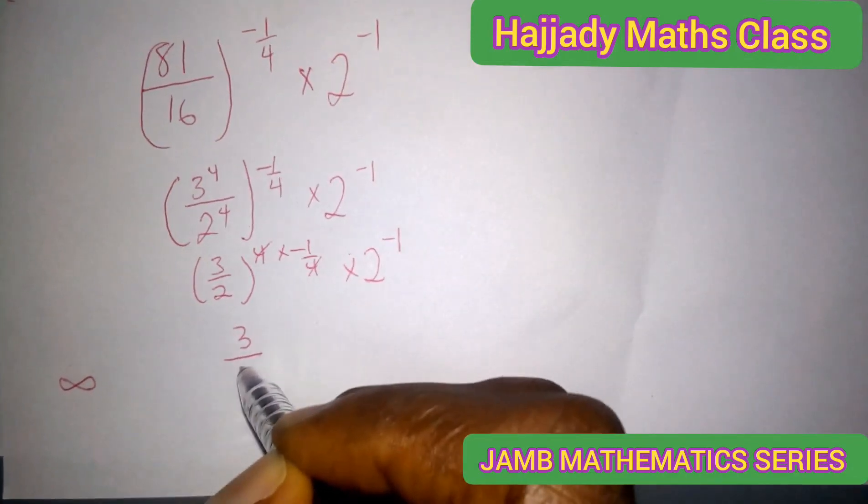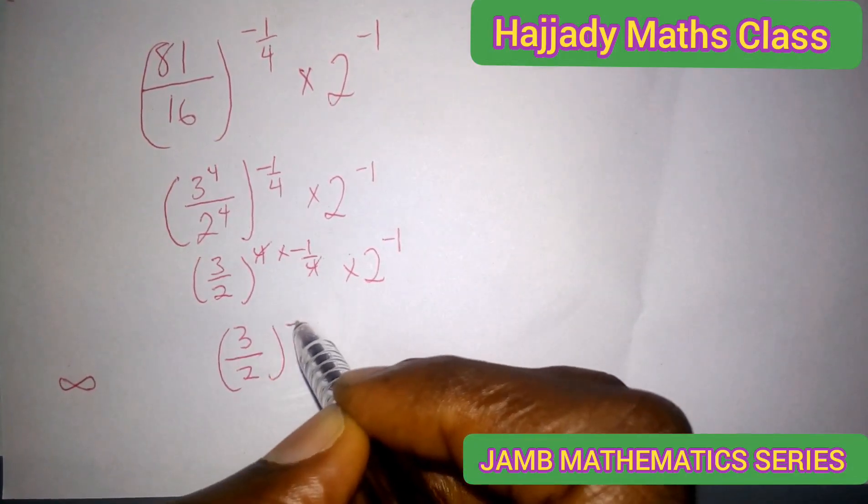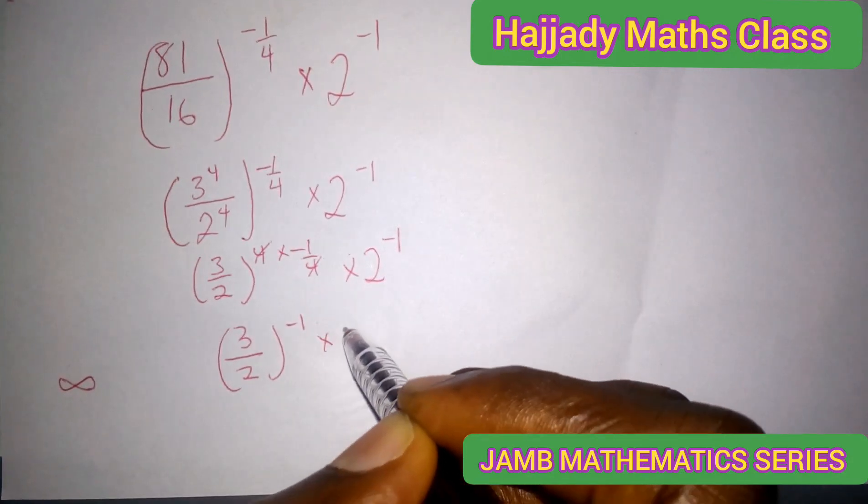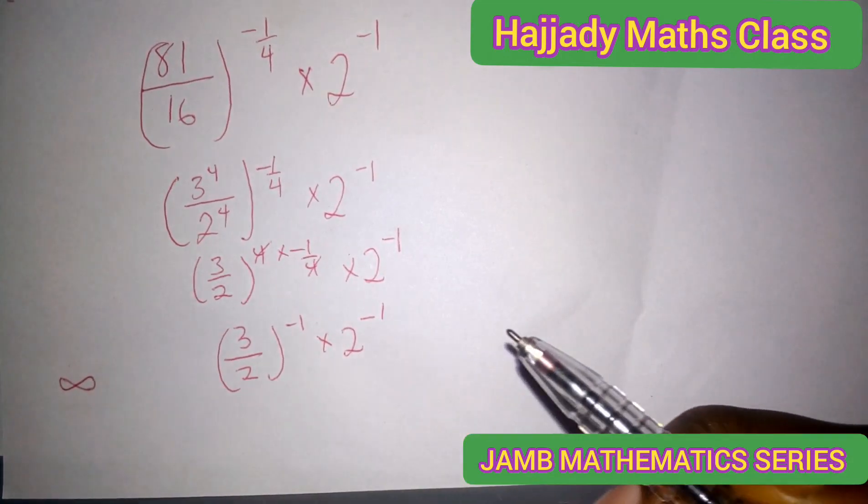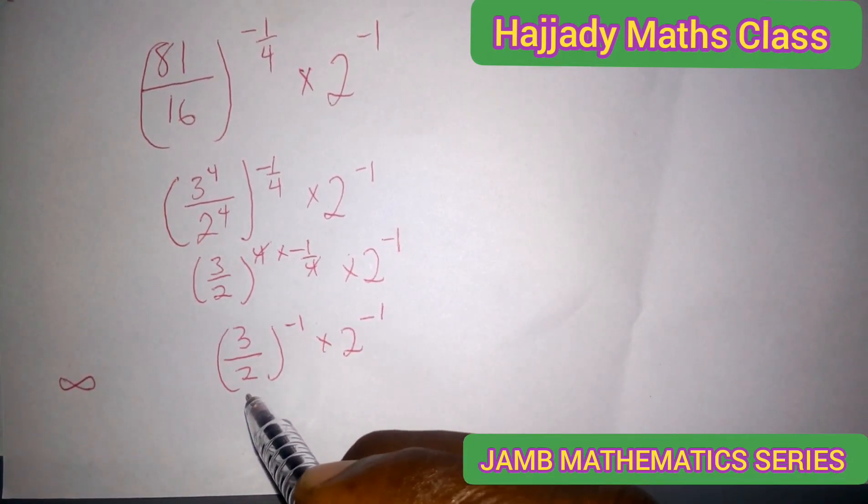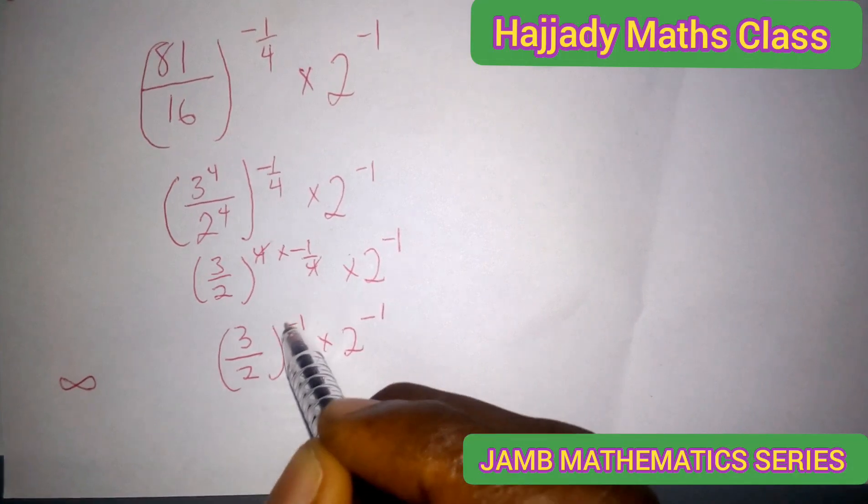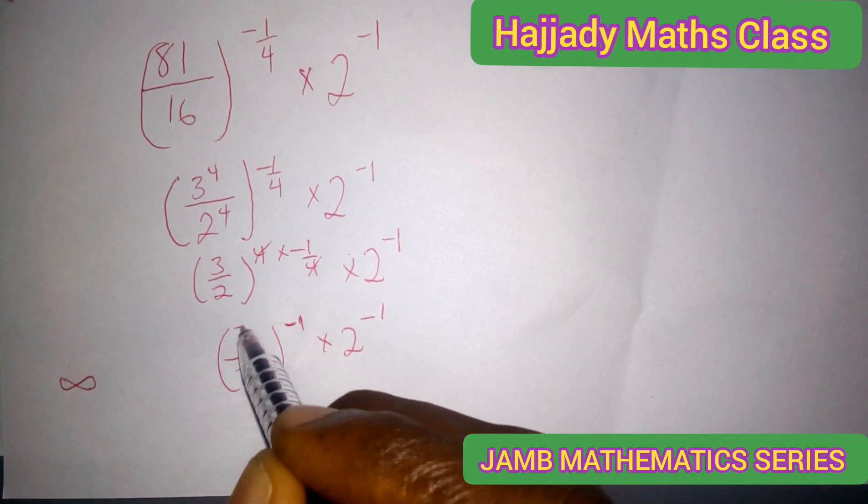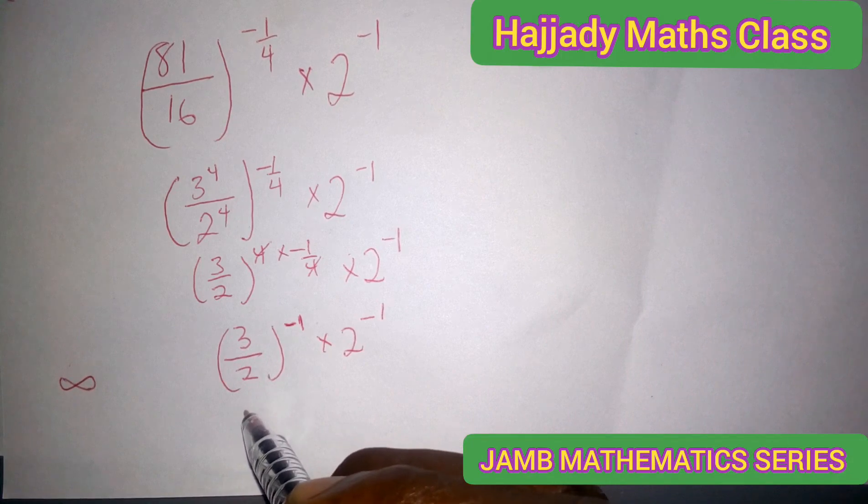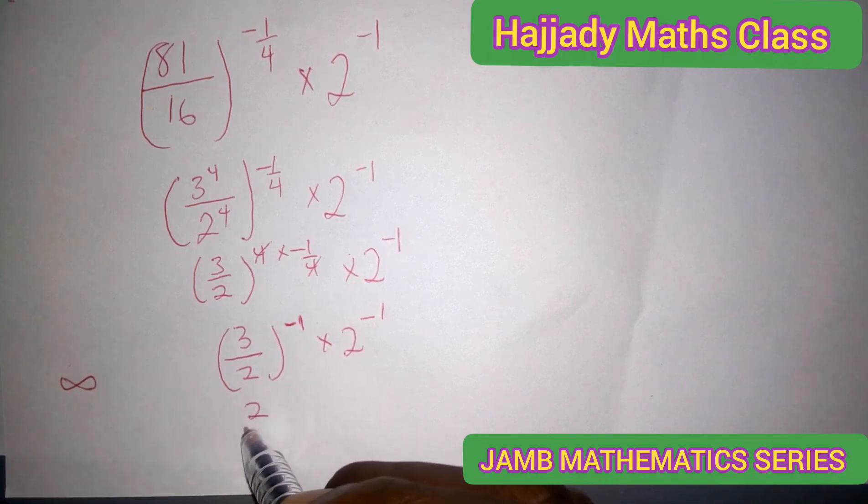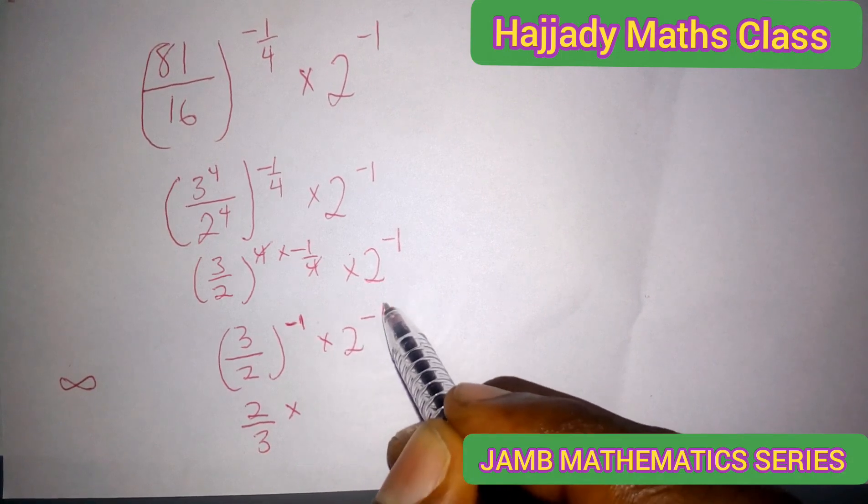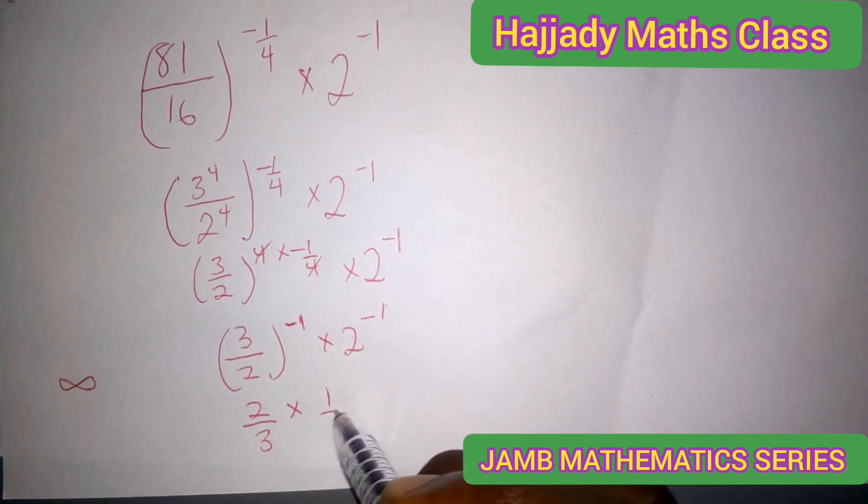So here we have 3 over 2 raised to the power of minus 1 times 2 raised to the power of minus 1. And also from here, this minus sign shows that you can find the reciprocal of this. And here we have 2 over 3 times 2 raised to the power of minus 1 is the same as 1 over 2.